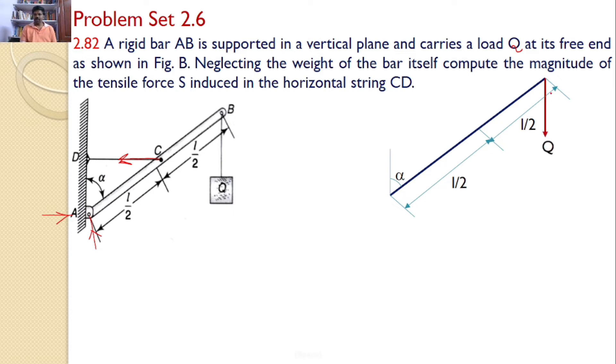Now, the various forces acting on the rigid bar AB: the weight Q attached at point B, there is a string force along the CD away from point C, and two reactions RAH and RAV at point A as A is the hinged support. Now, our interest is only to find the tensile force S, so I can directly take the moments about point A.